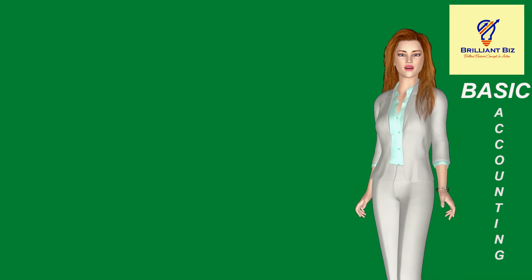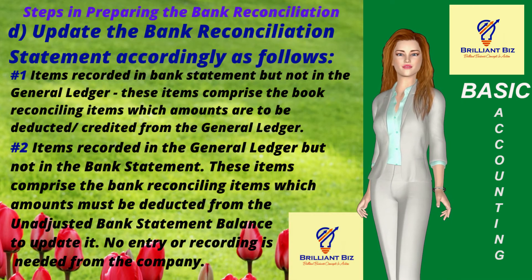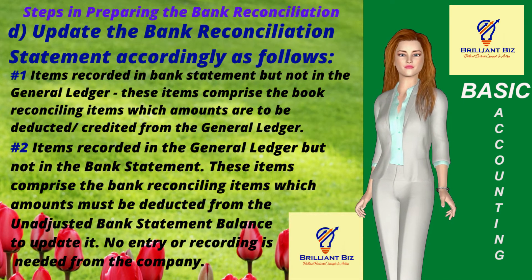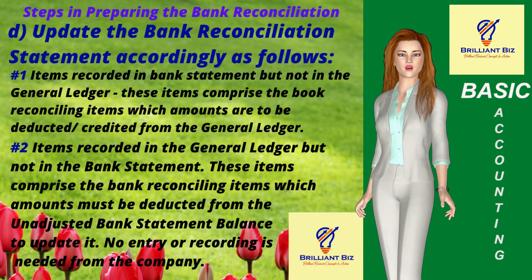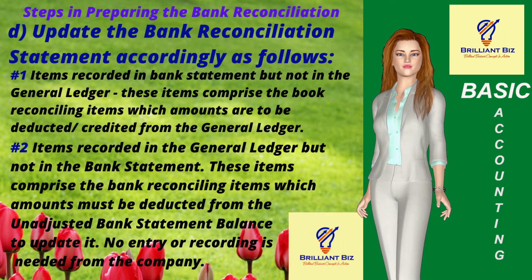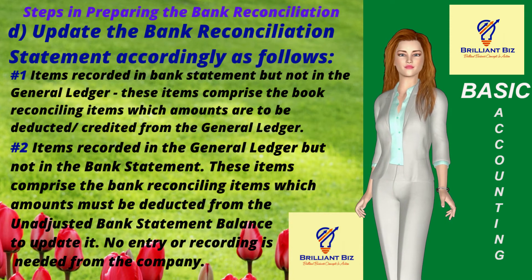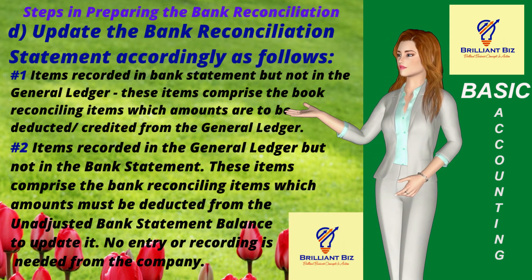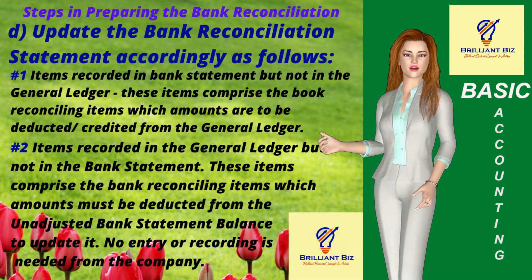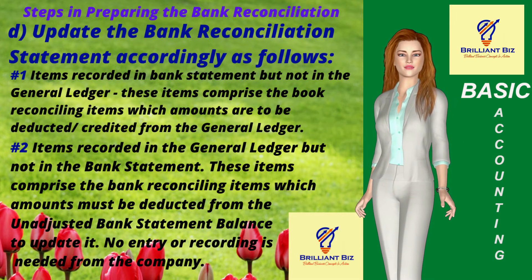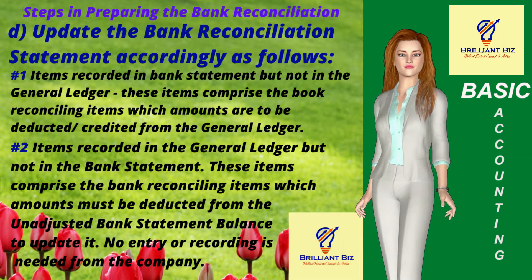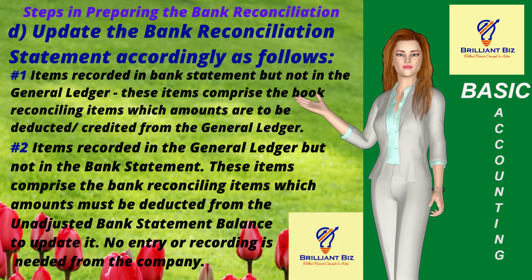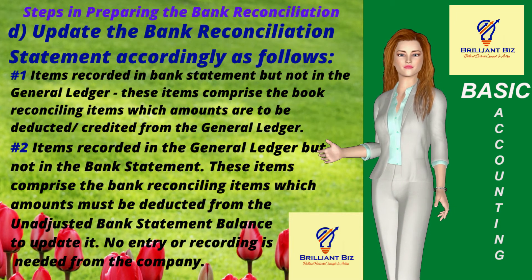Step 1D: Update the bank reconciliation statement accordingly as follows. (1) Items recorded in the bank statement but not in the GL — these comprise the book reconciling items in which amounts are to be credited from the GL. (2) Items recorded in the GL but not in the bank statement — these comprise the bank reconciling items which amounts must be deducted from the unadjusted bank statement balance to update it.